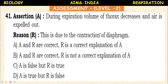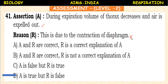Next question. Assertion — during expiration, the volume of the thoracic cavity decreases and air is expelled out. Assertion is correct. Reason — this is due to contraction of the diaphragm. The assertion is true, but the reason is wrong. Actually, during expiration, the diaphragm goes back to its normal position, moving upwards.